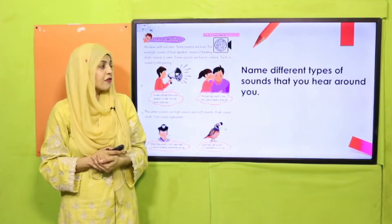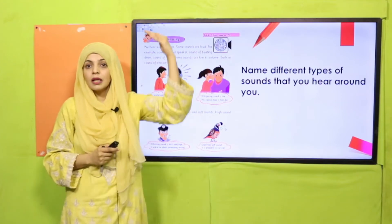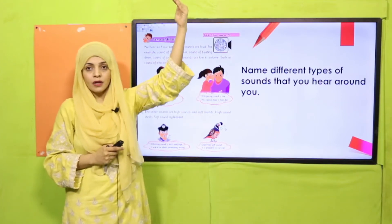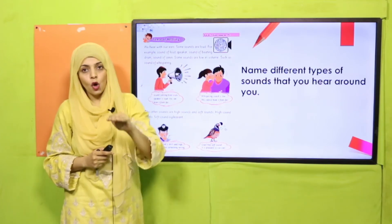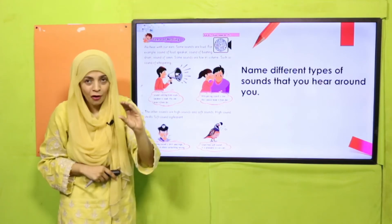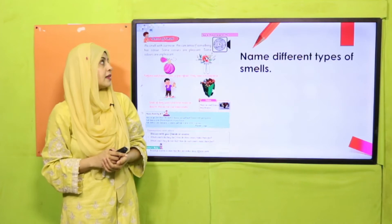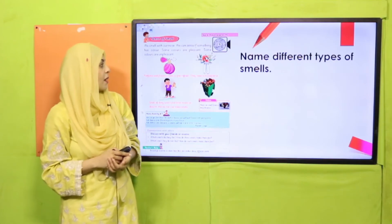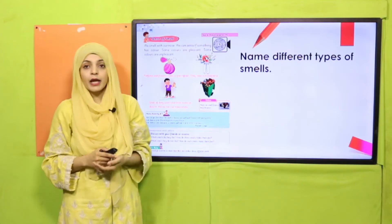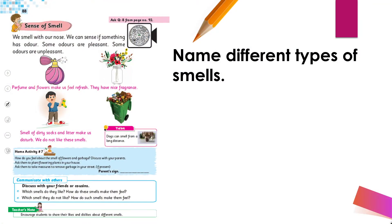Name the different types of sound that you hear around you: loud, low, high, soft. Very good! Then on page number 88, we discussed the sense of smell and the different types of smells that we smell.